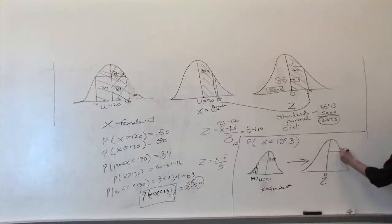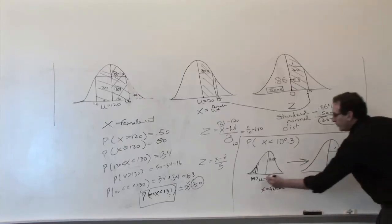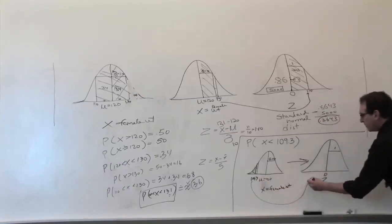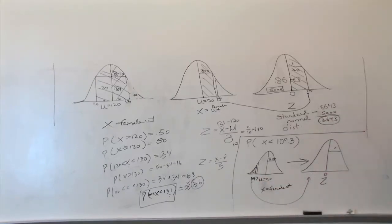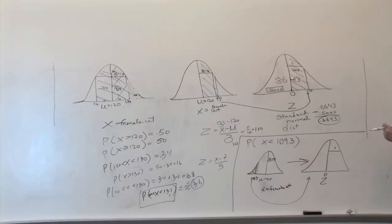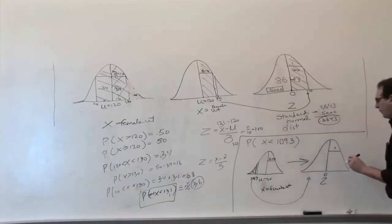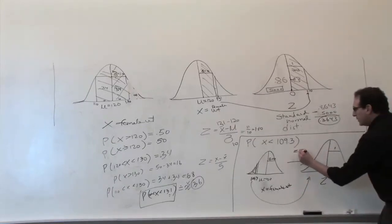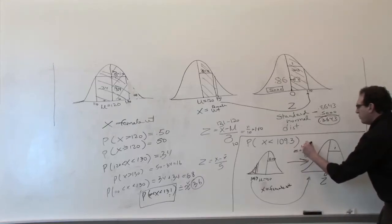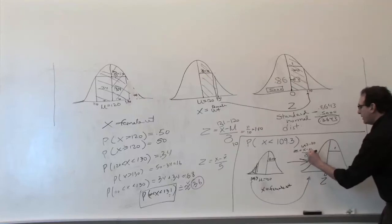To get the exact answer we convert to a Z diagram using a simple formula. I like to do this graphically and visually because if you can see it, it's much easier to get right. We go to another unit of measurement called Z units or standard deviation units. What does 109.3 correspond to? The formula is z equals x minus mu over sigma.